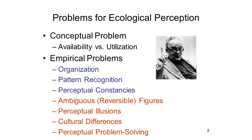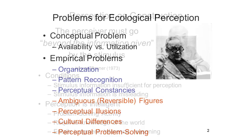There are some empirical problems as well. First, the problem of perceptual organization, as discussed by the Gestalt psychologists. And the problem of pattern recognition, as encountered in word and speech perception. And finally, the problem of the perceptual constancies, where perception remains constant despite changes in the pattern of stimulation. These empirical problems are more or less problematic for the ecological view. Perceptual constancies, probably less problematic. Pattern recognition in speech and word perception, certainly more problematic.